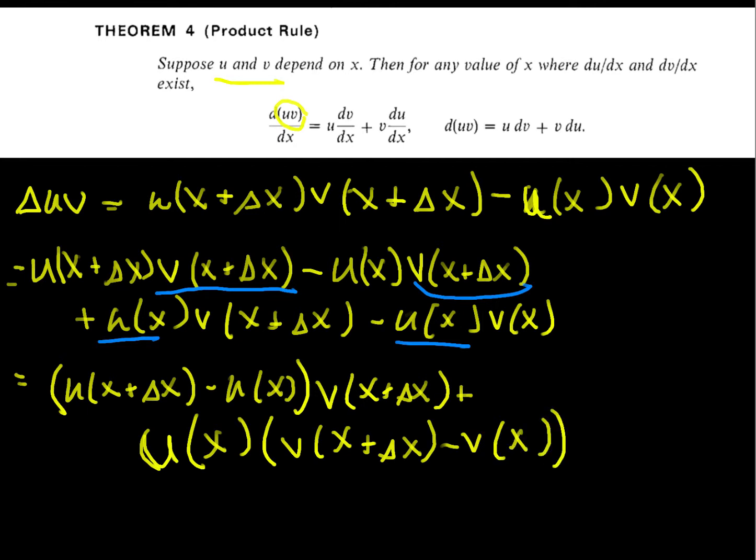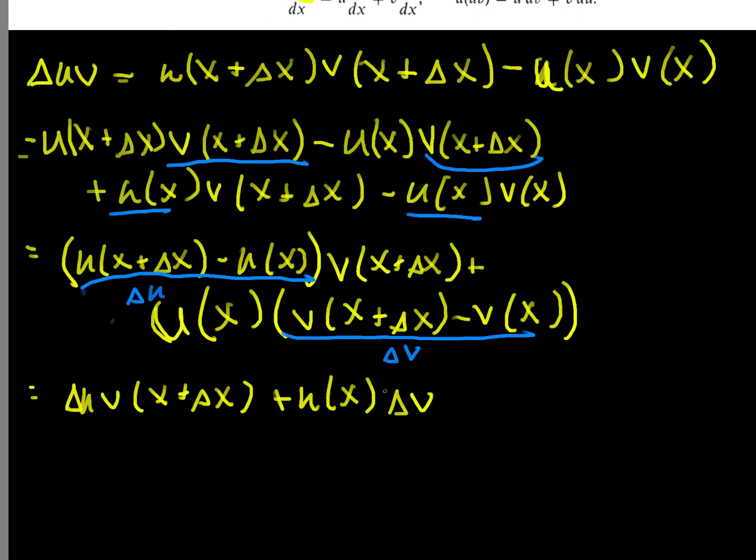And why this is such a nice feature is because this right here is just my delta u, right, that's delta u. And this right here is delta v. So recognizing that, I can rewrite this using that notation as the change in u times v of x plus delta x plus u of x times change in v. All right, so that's how I'm going to write delta uv.